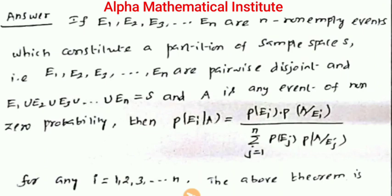The sample space is partitioned by E1, E2, ..., En — n pairwise disjoint events, where Ei ∩ Ej = empty set for i ≠ j.